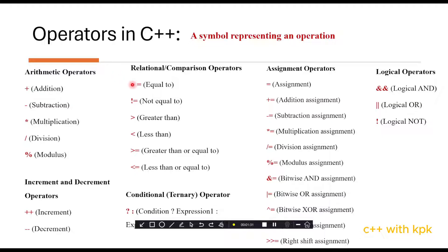So this is what we call the equal-to operator. The next is the not-equal-to operator, where we use an exclamation mark and equal sign to represent that in C++. Then you have the greater-than operator, the less-than operator, the greater-than-or-equal-to operator, and the less-than-or-equal-to operator.